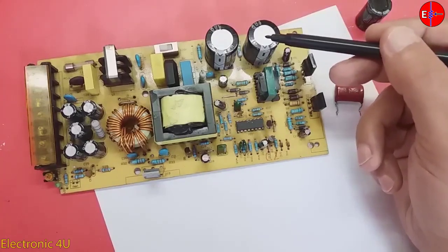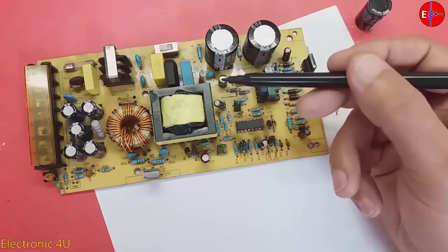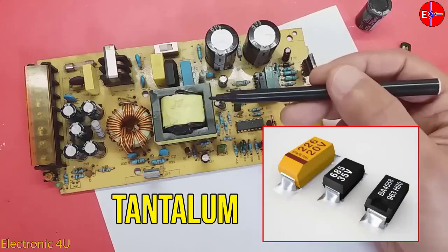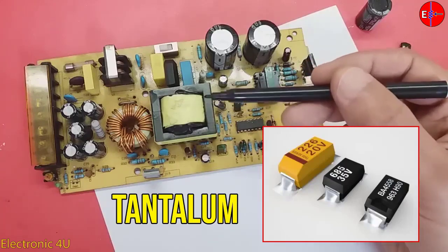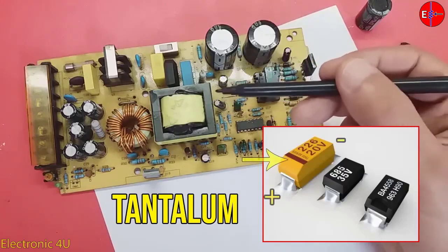Electrolytic capacitors can have a large capacity. There is another capacitor called tantalum that is not present in this circuit. Pay attention to the picture. They have small dimensions, but the capacity is high. They also have few casualties.